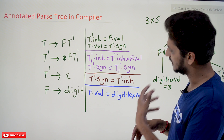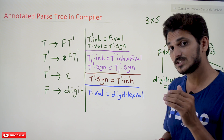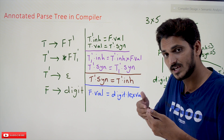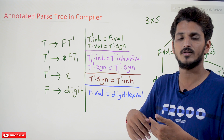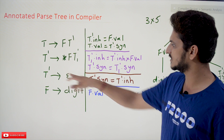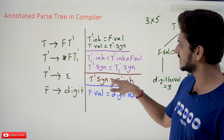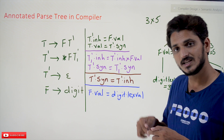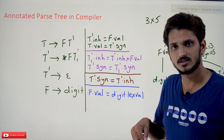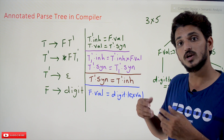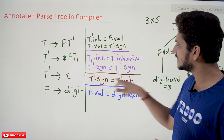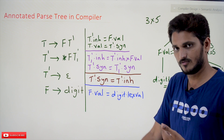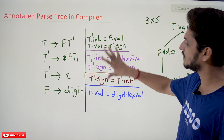The reason we chose this example: in our last class we discussed that for synthesized attributes, the parent takes its values from its child or itself. To illustrate that point, T' → epsilon has the condition T' dot syn = T' dot inh — here it is taking value from itself (T' dot inh), so this is a synthesized attribute because the parent takes values from itself or a child.